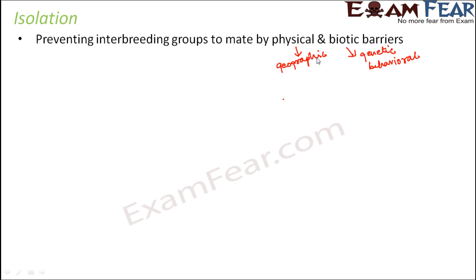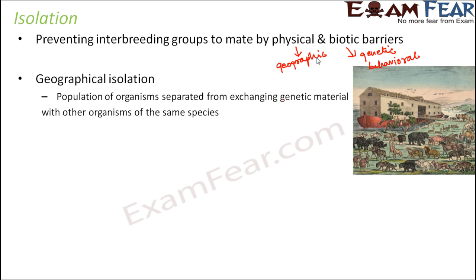That is called isolation. Now let us look at some more types of isolation, like geographical isolation. Geographical isolation is when a population of organisms is separated from exchanging genetic material with other organisms of the same species. Even though the organisms belong to the same species, they are not allowed to mate with each other.